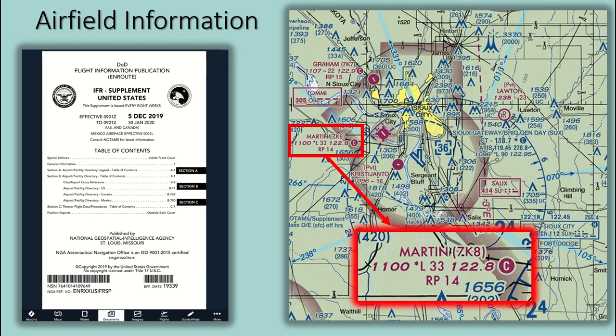Finally, runway 14 is a right pattern. The opposite direction, runway 32, is standard left-hand turns.